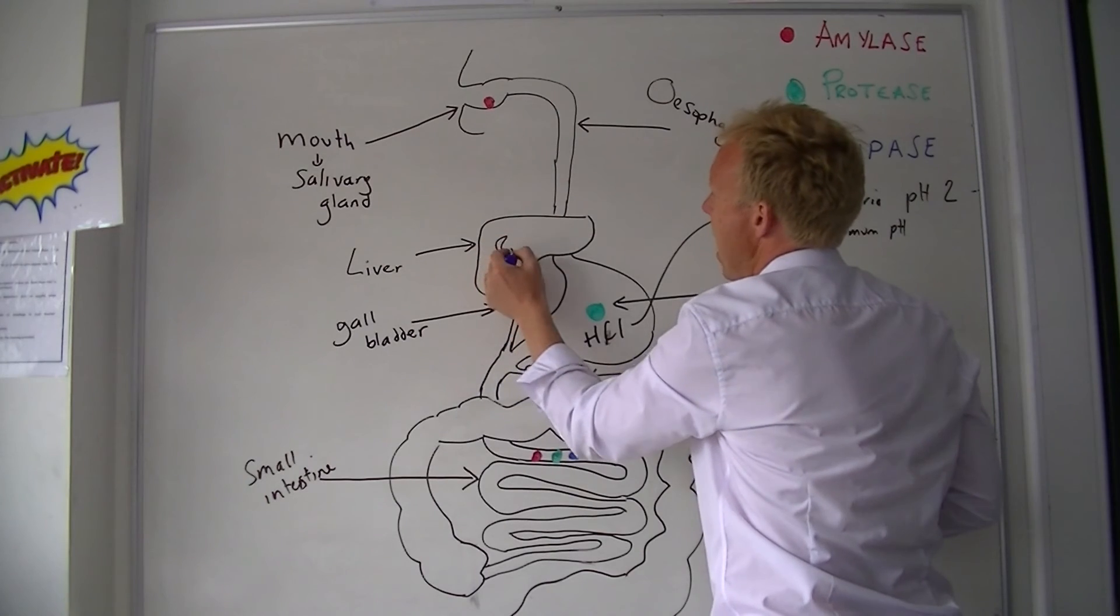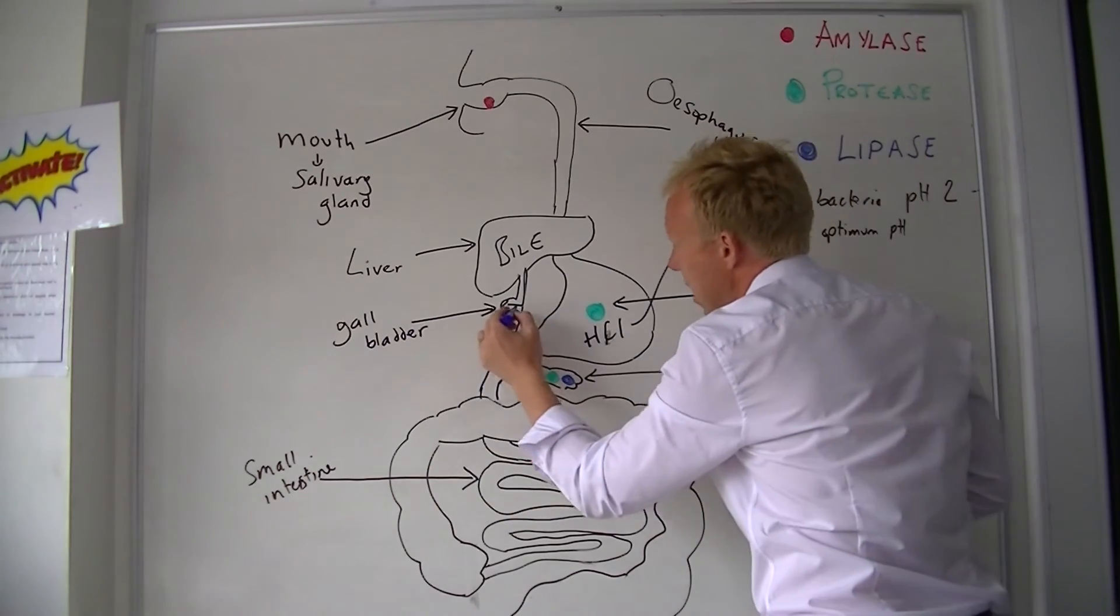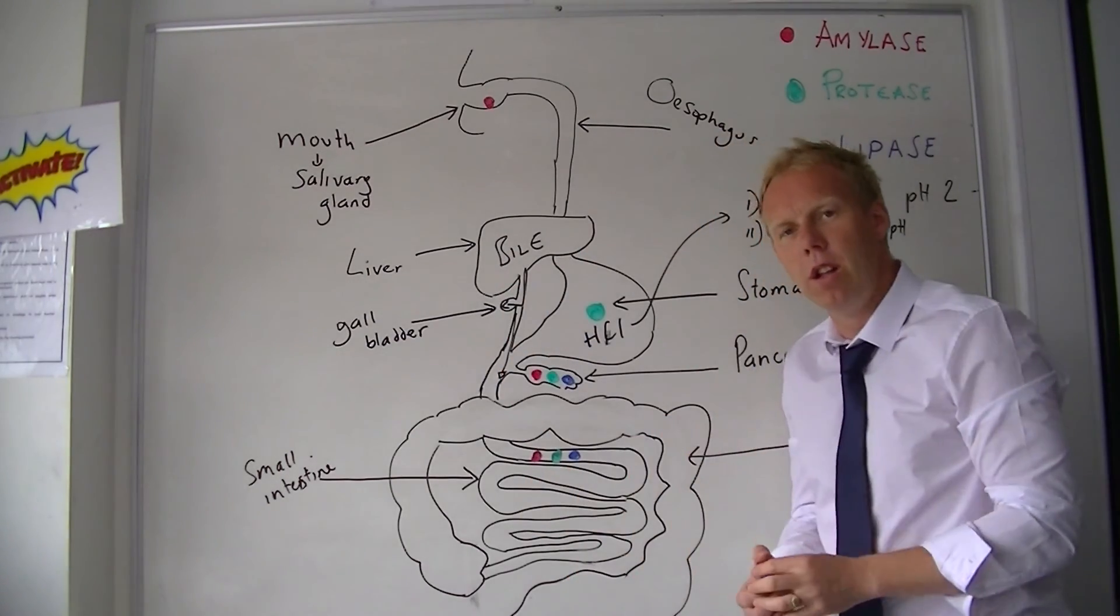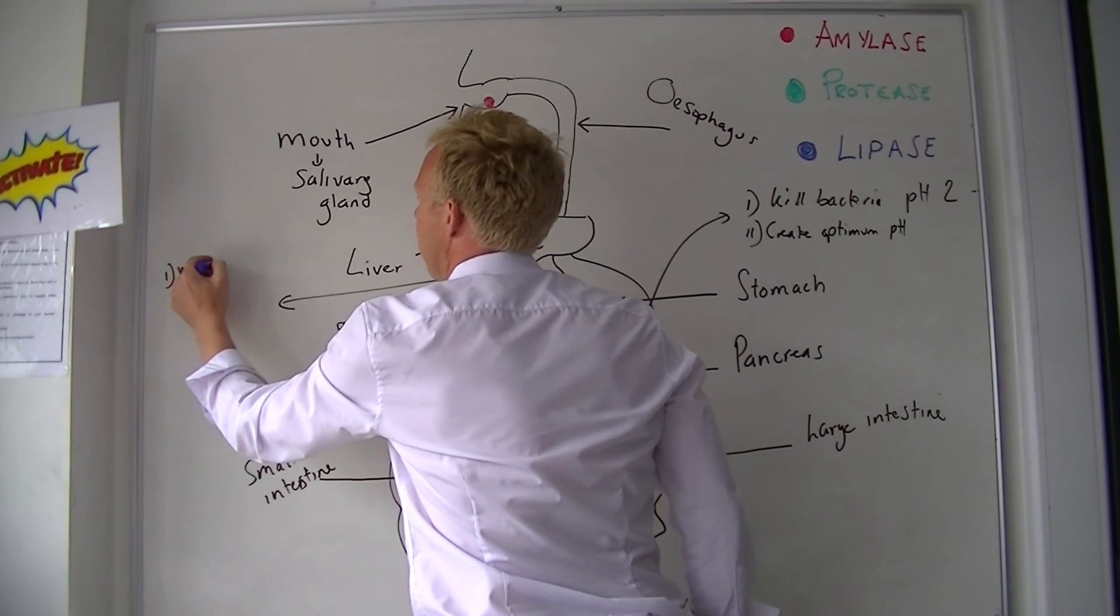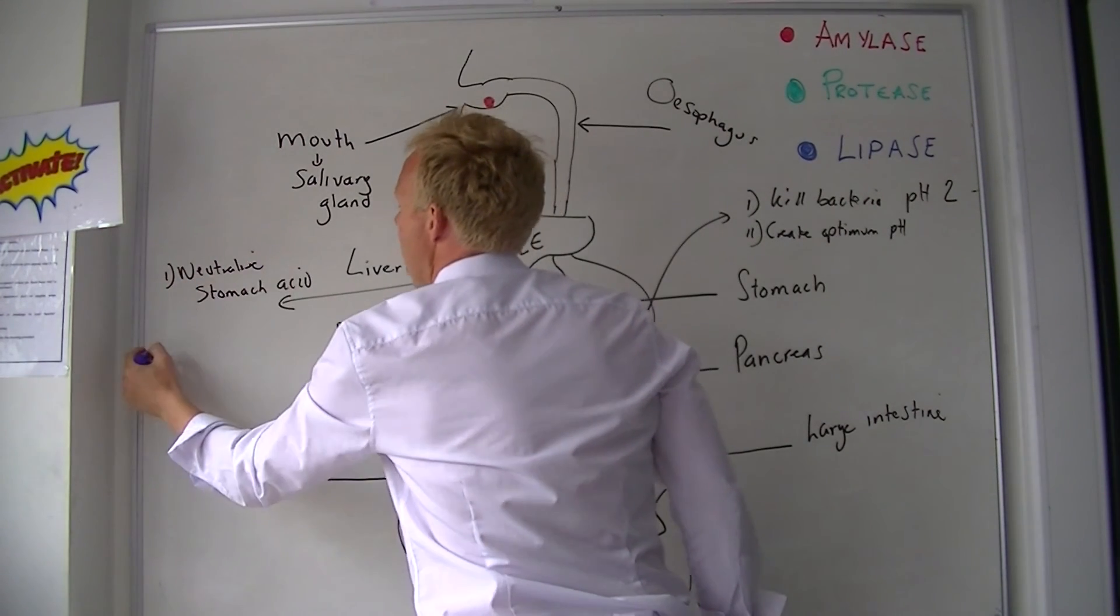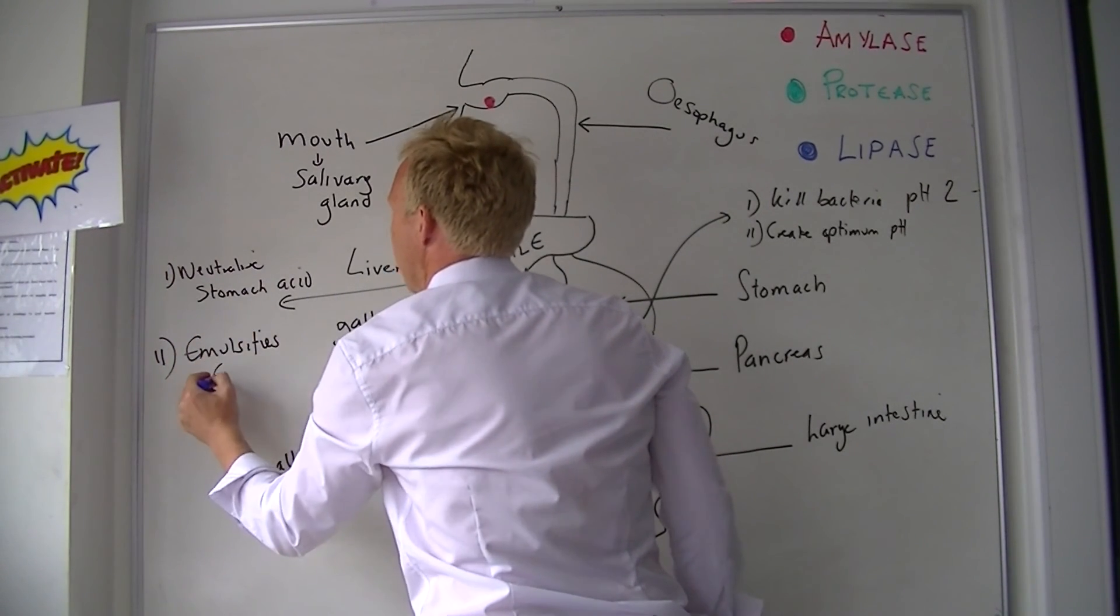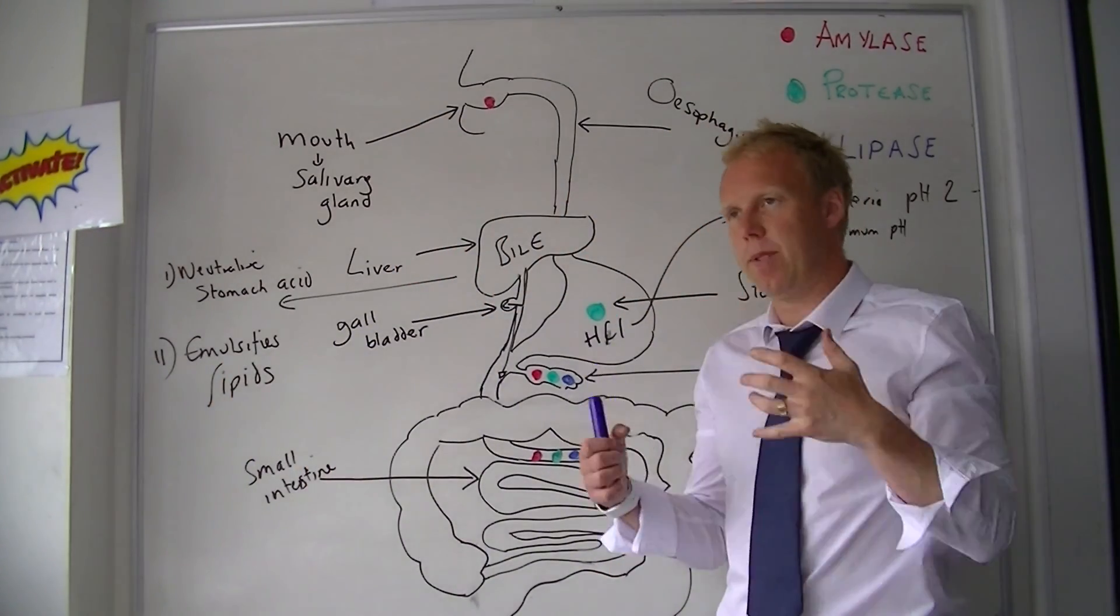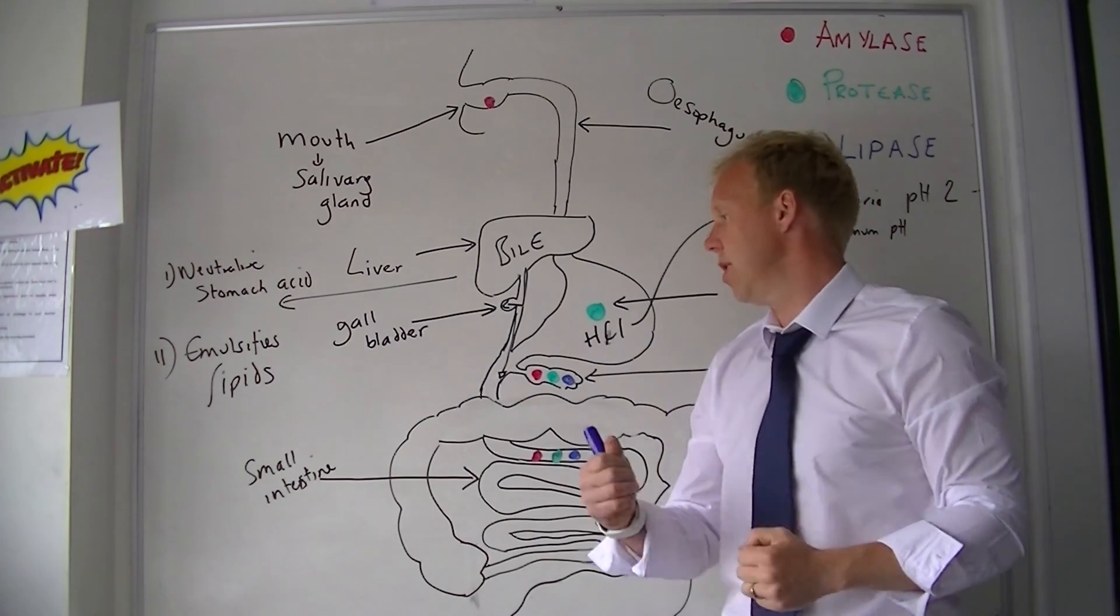And then we have a chemical that is made in the liver, stored in the gallbladder, and then released into the small intestine—a chemical called bile. Bile does two jobs. It neutralizes the stomach acid. And secondly, it emulsifies lipids. Emulsification is a big word, but it just means taking large globules of fat and making small globules of fat, so the enzyme can work better.